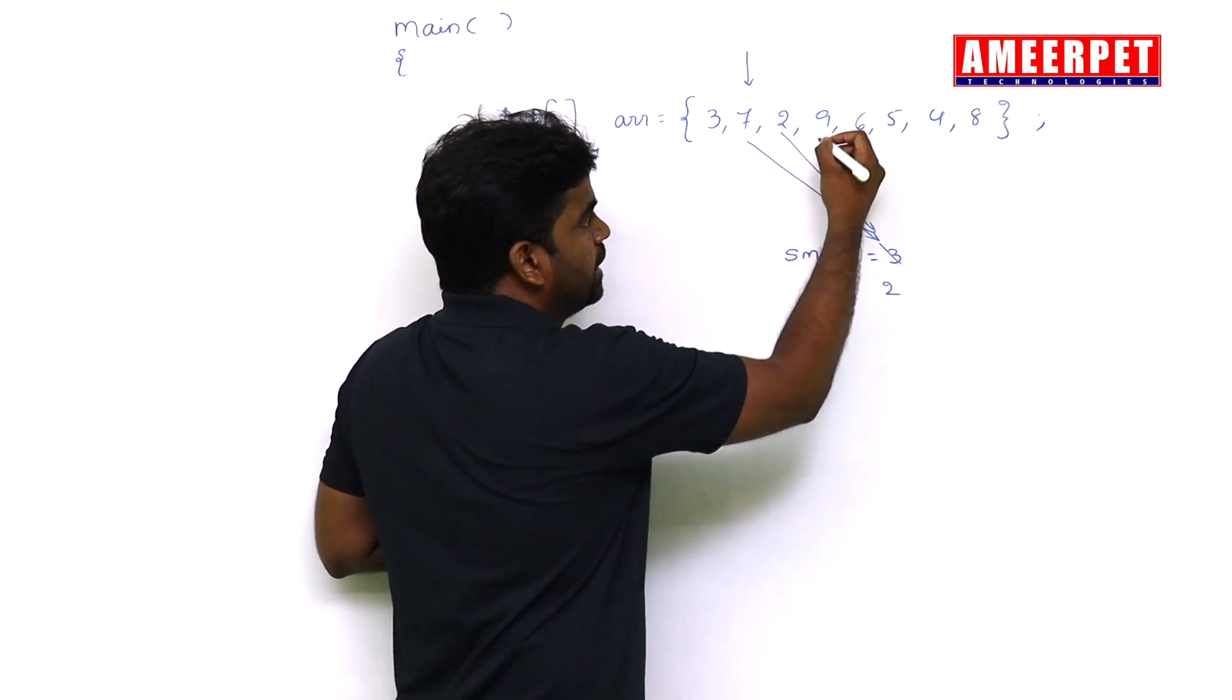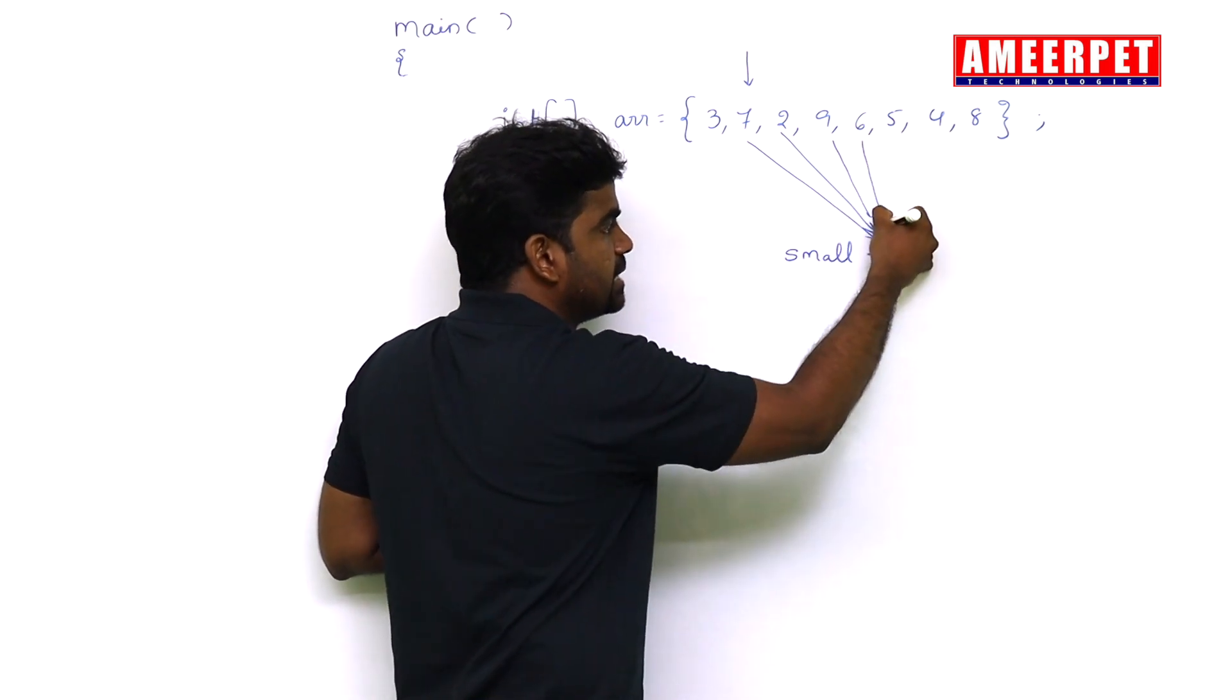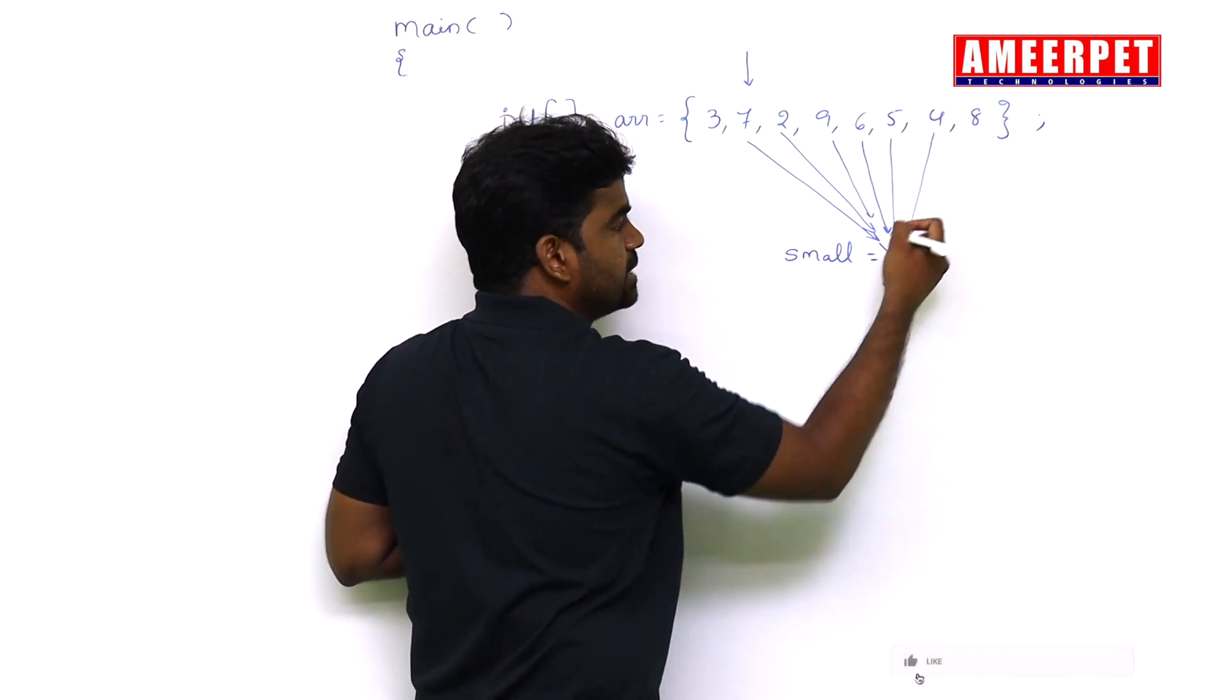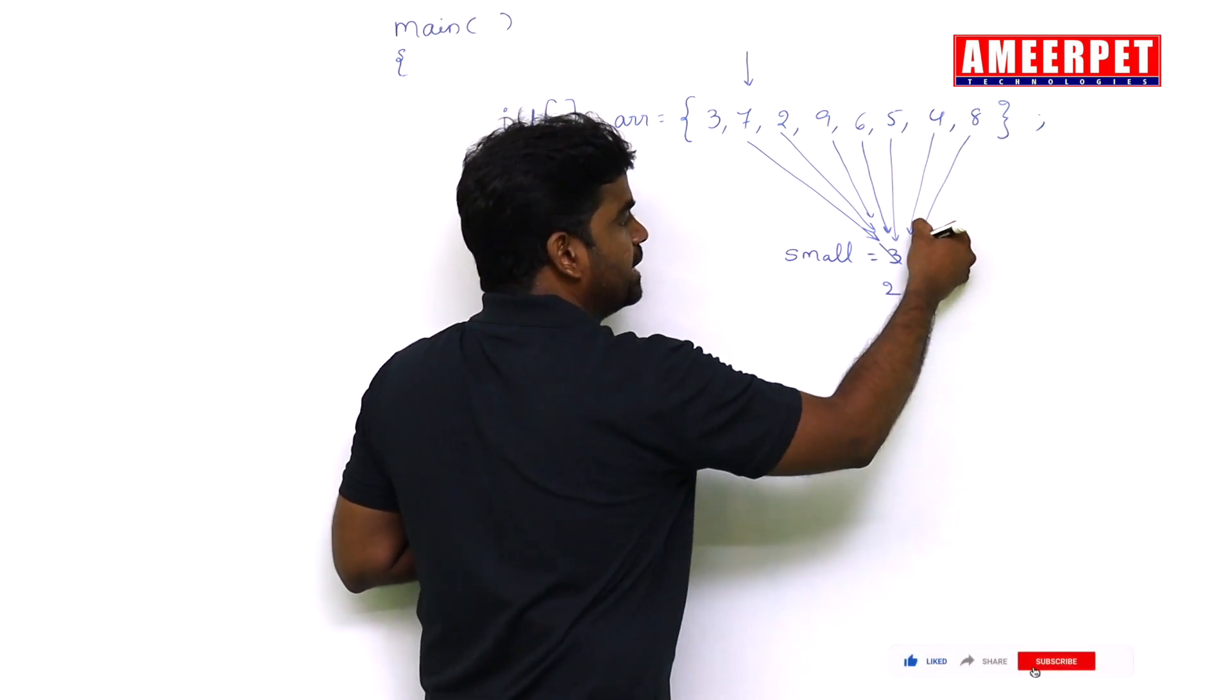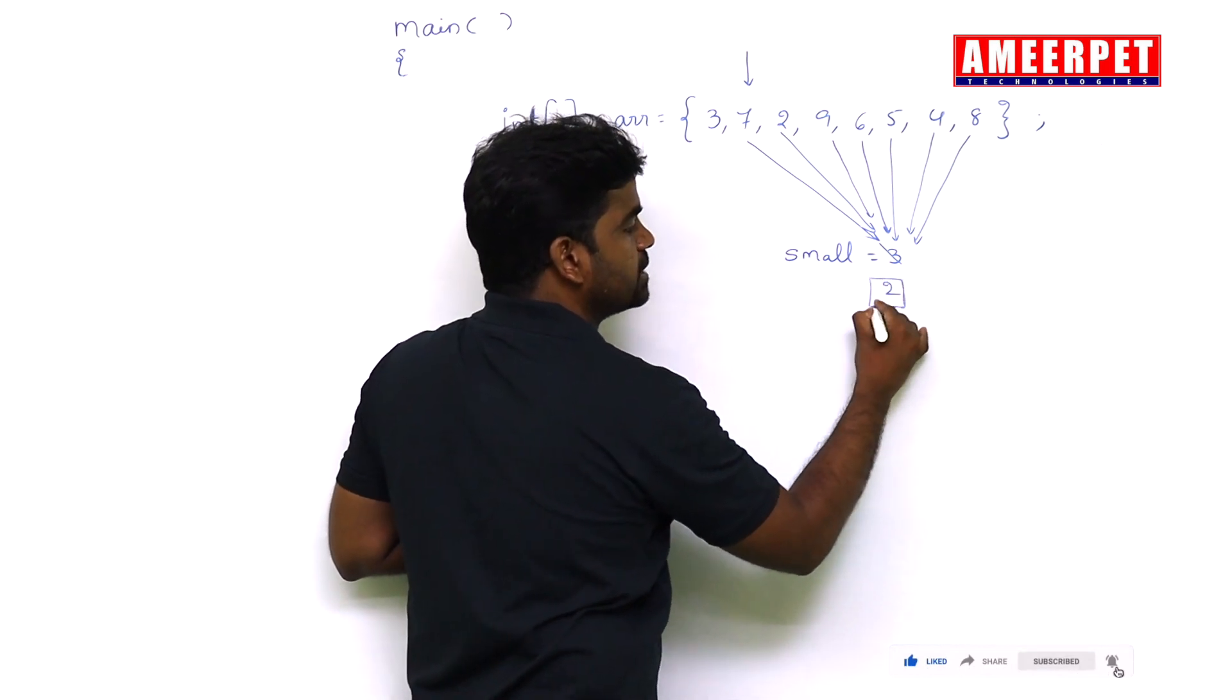Now the small becomes 2. Next, is 9 less than 2? No. Is 6 less than 2? No. Is 5 less than 2? No. Is 4 less than 2? No. Is 8 less than 2? No. So finally we got the smallest element.